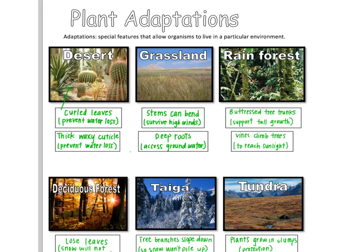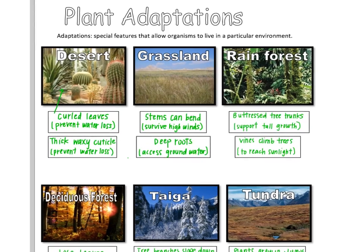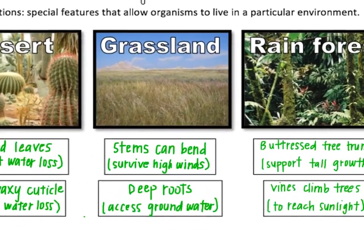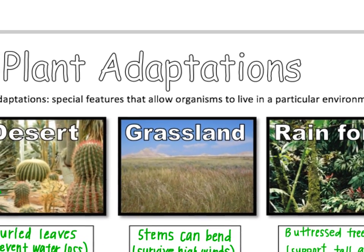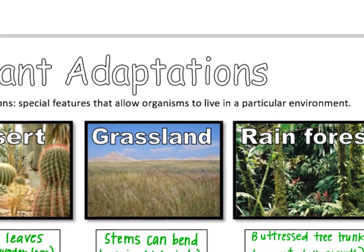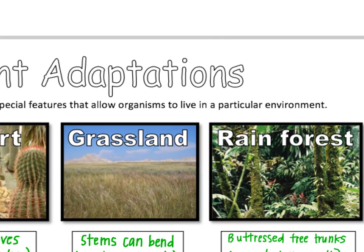Plant adaptations are special features that plants have that allow them to live in a particular environment. We're going to start out by looking at six certain environments that some plants have adapted to.